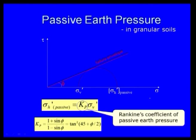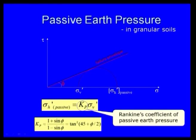The passive stress is sigma-H prime = Kp × sigma-v prime. Rankine's coefficient of passive earth pressure is Kp = (1 + sin φ) / (1 − sin φ), with no delta term since Rankine's theory assumes a smooth wall. For active pressure, Ka = (1 − sin φ) / (1 + sin φ), which equals tan²(45° + φ/2) for Kp.